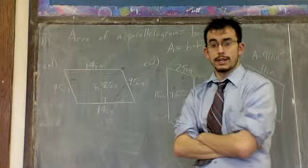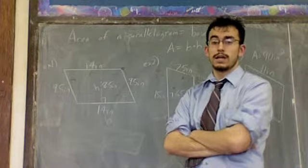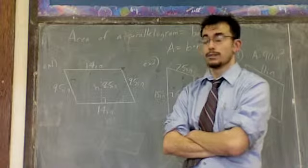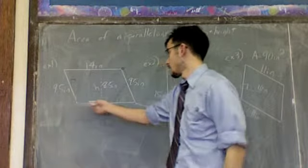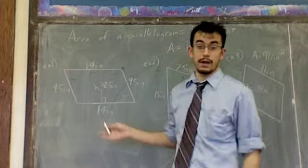Alright, what we're going to see here is how to get the area of a parallelogram. Now, hopefully you remember what a parallelogram is. A parallelogram is any four-sided figure where both sets of sides are parallel to each other. You've got here, this side is parallel to this side, and this side is parallel to this side. So it is a parallelogram.